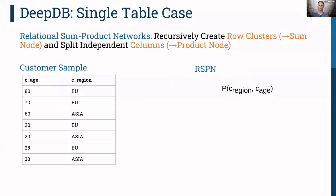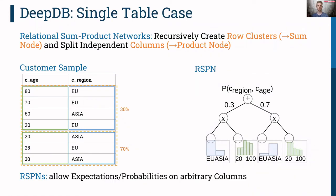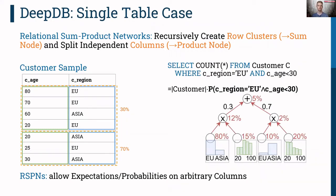Let me explain how relational sum-product networks work in the single-table case. The idea is to recursively create row clusters — introducing sum nodes — and split independent columns, introducing product nodes. For example, given a customer sample, we learn a model for the probability distribution of age and region. We first create a cluster of older European customers and a cluster of younger Asian customers, introducing a sum node. Within those clusters, age and region are independent, so we introduce a product node splitting both columns. For the remaining clusters we learn traditional histograms as leaf nodes. We can then compute probabilities on arbitrary columns — for instance, how many customers are European and younger than 30 — by pushing conditions to the leaves, multiplying at product nodes, and computing the weighted sum at sum nodes. The models also support efficient updates.